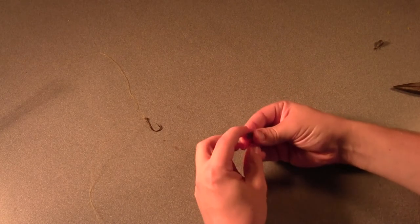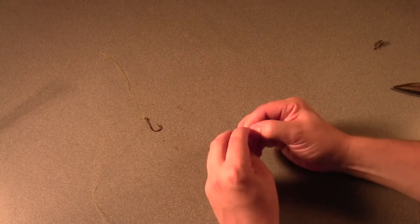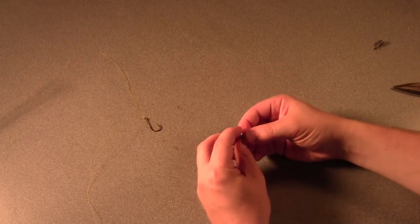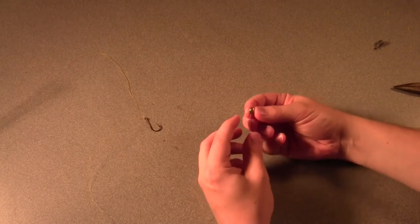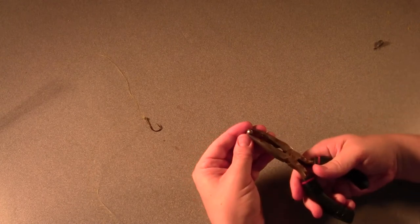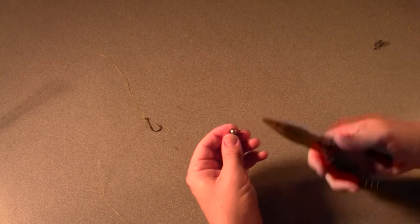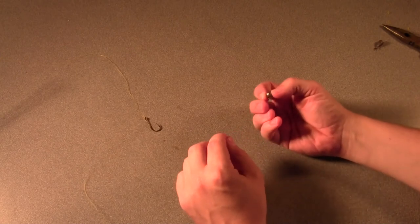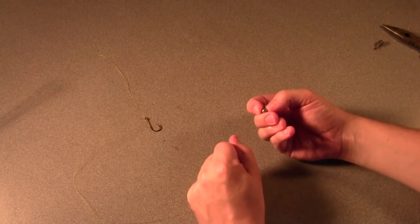And the reason for that, a lot of times with the drop shot rig, if there's structure on the bottom, you get snagged. And most of the times when you get snagged, you'll be snagged on the sinker. So I like to use a split shot, because even when a split shot is crimped completely tight, it still can pull off.